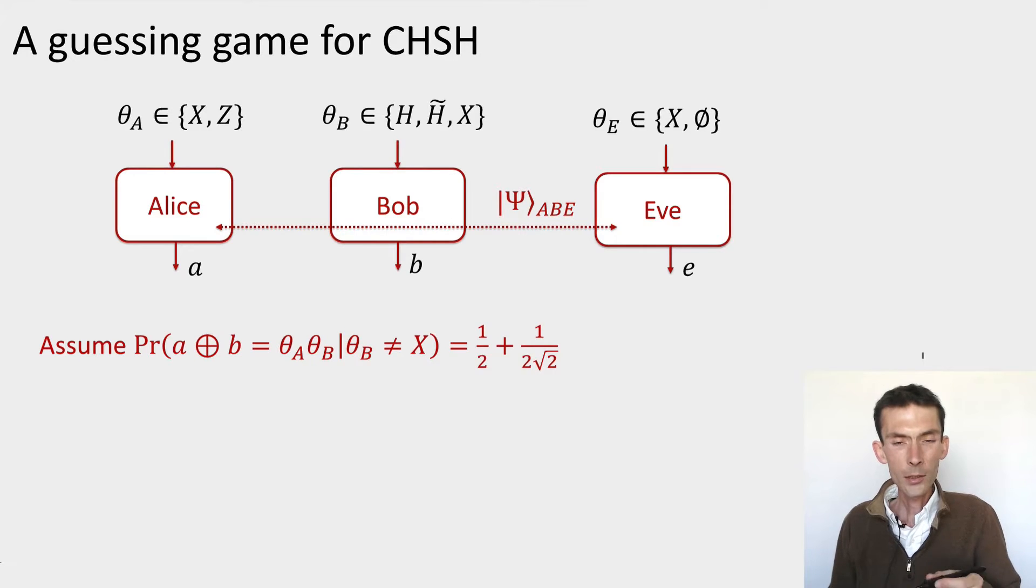There are three parties: Alice, Bob, and Eve. Alice and Bob can get inputs just as in the device-independent quantum key distribution protocol. So this is two possible inputs for Alice. Instead of labeling them 0 and 1, as usual, I labeled them using x and z, but it's really the same thing.